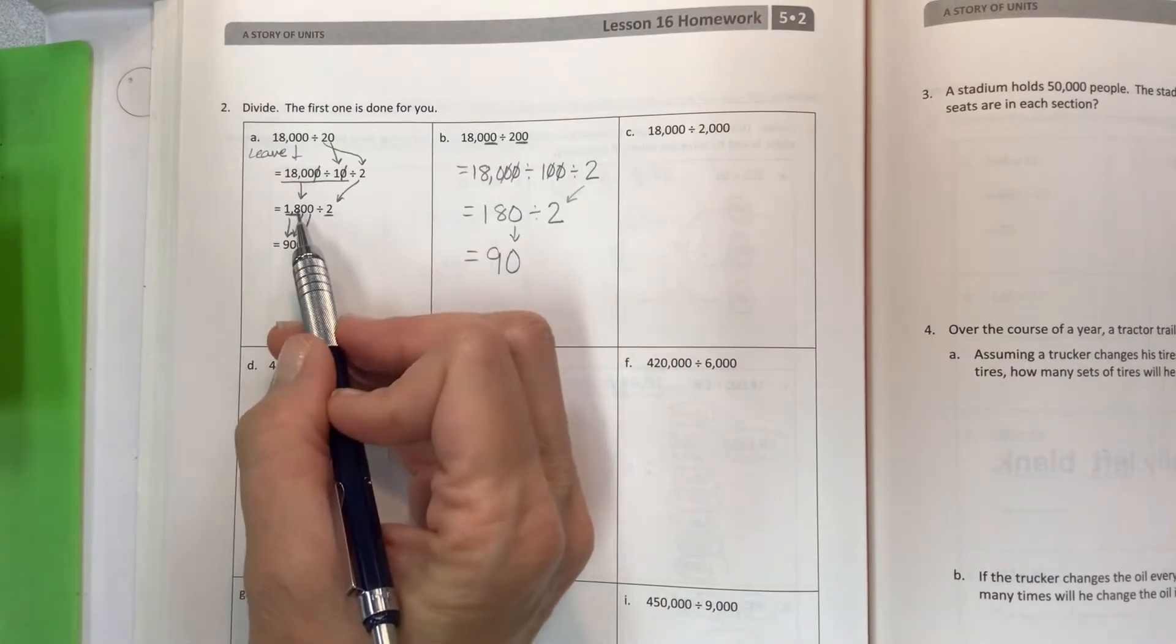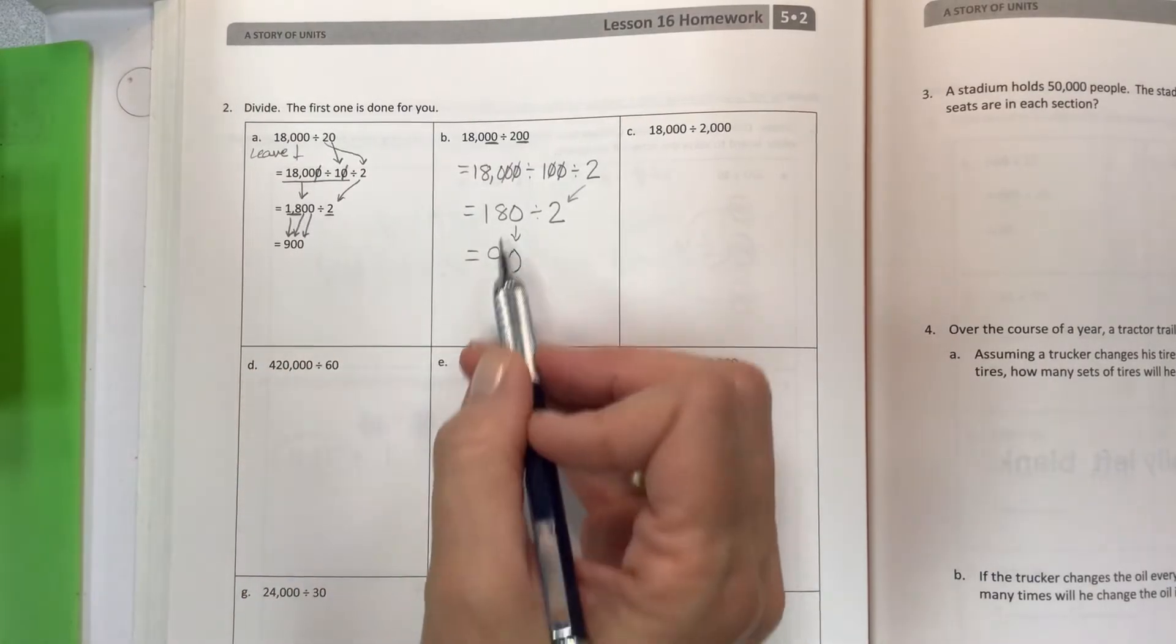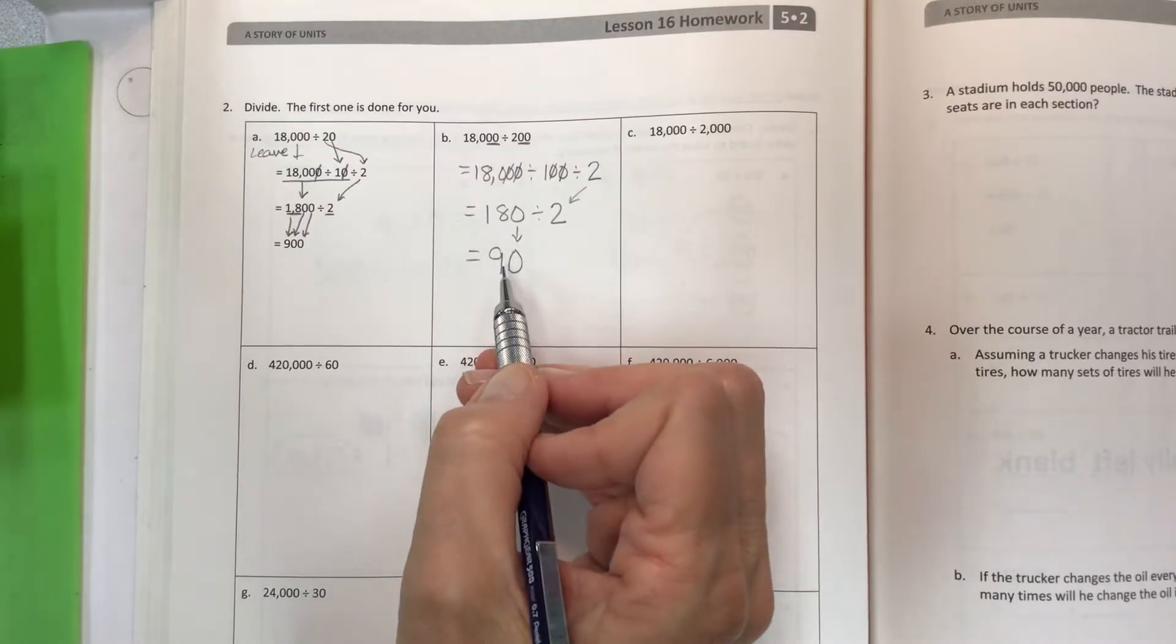This one was 900 because I had a bigger dividend. This one, I have a smaller dividend, but I still have the same divisor.